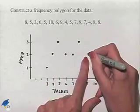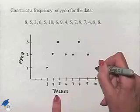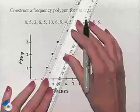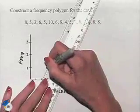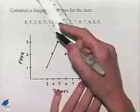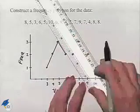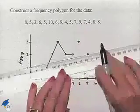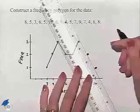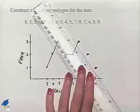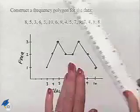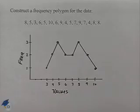So 9, 2, and 10, 1. And now for a frequency polygon, what we're going to do is connect the dots with line segments. So we'll end up connecting, and then once more, connecting, moving from left to right. And that's our completed frequency polygon.